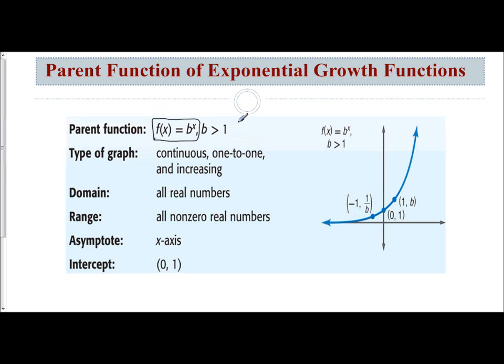We see here b has to be greater than 1. This is what tells us that we're dealing with growth. Our domain is all real numbers, which means when it comes to your exponent of x, you can choose any x value that's a real number. Your range for the parent function is all non-zero real numbers, which means your y value has to be greater than 0.